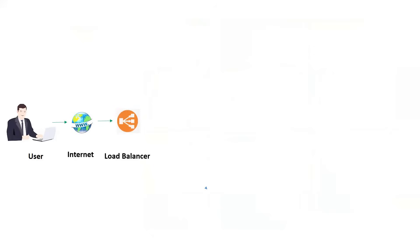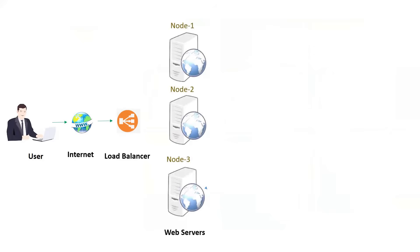A user trying to access a website first has the request go to a load balancer. There are separate load balancers — some hardware, some software. Suppose you have three back-end nodes — Node 1, Node 2, Node 3 — as web servers; the load balancer will distribute requests between them. For example, the first user goes to Node 1, the second to Node 2, the third to Node 3. This is called the round-robin algorithm, where the load balancer routes requests one by one to all back-end servers.